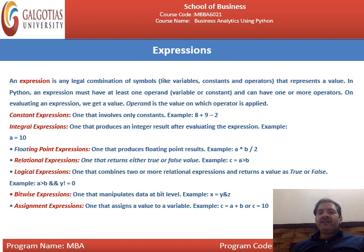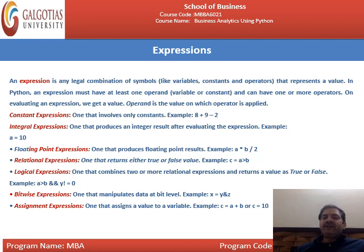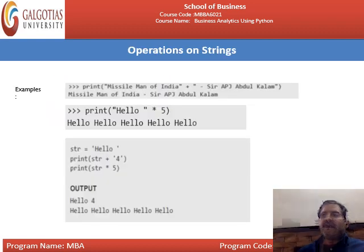You should know what kinds of expressions you may encounter while programming in Python. A logical expression combines two or more relational expressions and returns true or false — for example, A > B AND Y != 0. A bitwise expression manipulates data at the bit level — for example, X = Y & Z. For AND, if both inputs are high (1), output is high; otherwise output is 0. An assignment expression assigns a value to a variable — for example, C = A + B, which might give C = 10.